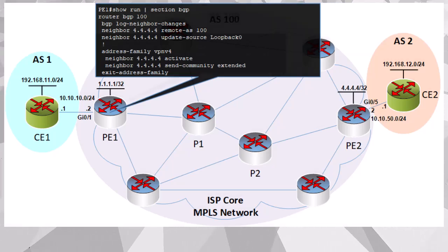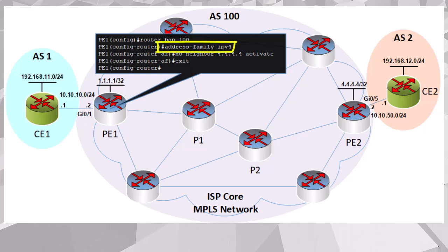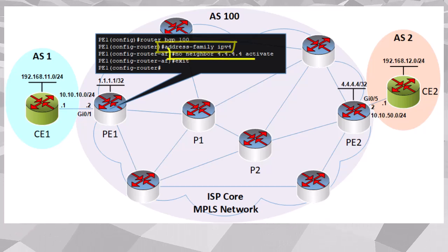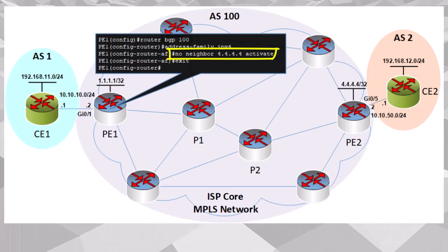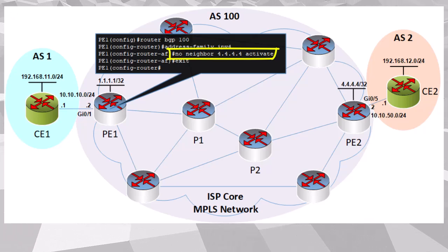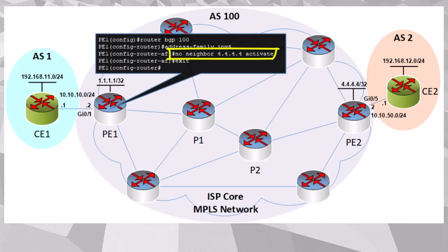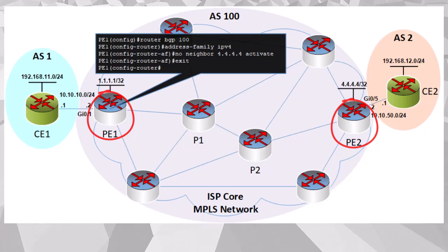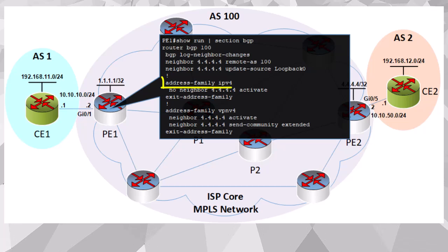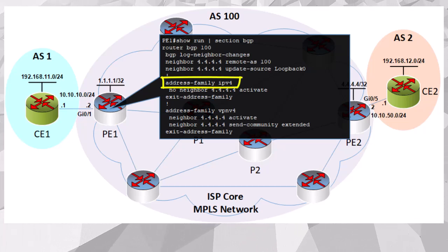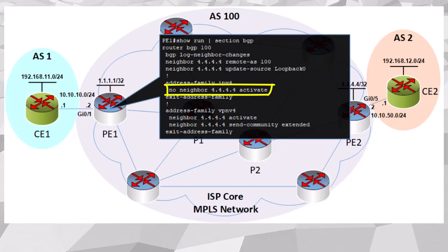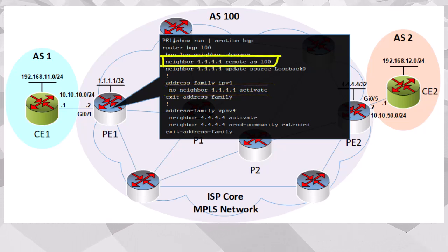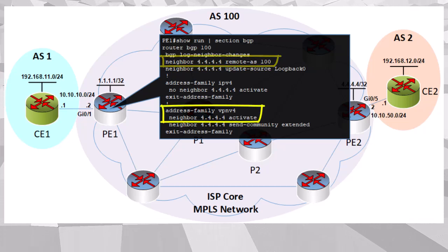So the first thing we'll do is to disable the IPv4 address family exchange. To do that, we explicitly configure the IPv4 address family by entering the IPv4 address family configuration mode, and then we issue the no neighbor 4.4.4.4 activate command. This command simply deactivates the sharing of IPv4 address family routes between the PE1 and PE2 routers. The result is that we now have the explicit configuration of the IPv4 address family with the command no neighbor 4.4.4.4 activate. The neighbor relationship is still up, but the IPv4 routes are no longer shared — only the VPNv4 routes are active on PE1.